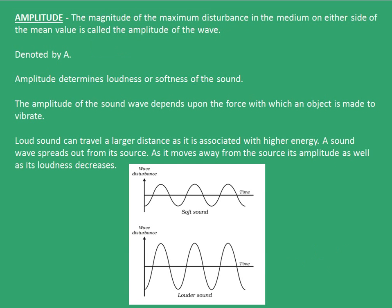The second term is the amplitude of the wave. The magnitude of the maximum disturbance in the medium on either side of the mean value is called the amplitude of the wave, denoted by capital A. Amplitude determines the loudness or softness of the sound. The amplitude of the sound wave depends upon the force with which an object is made to vibrate. Loud sound can travel a larger distance as it is associated with higher energy. As a sound wave moves away from the source, its amplitude as well as its loudness decreases.